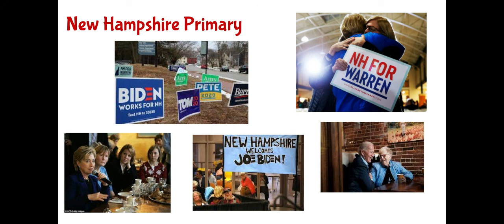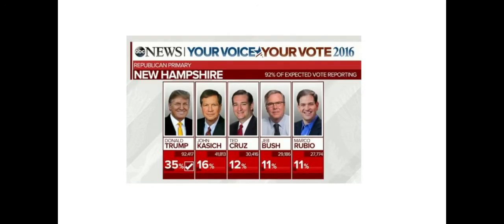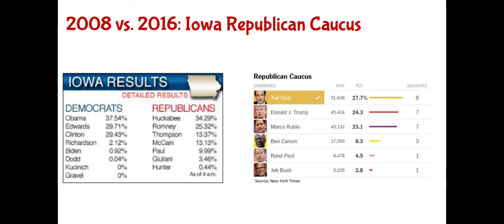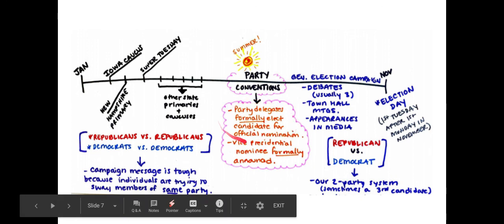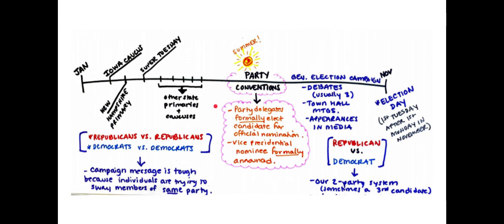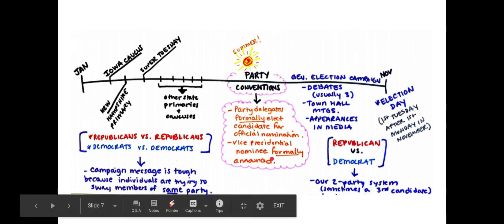In 2016, Donald Trump had a clear victory in the New Hampshire primary, whereas the caucus results had been much closer. Going back to the calendar — after you have two presumptive nominees, Democrat and Republican, the party conventions are where party delegates formally elect the candidate for the official nomination. We'll know Joe Biden is the candidate going into the Democratic convention, but it's formally done there. The vice presidential nominee will also be formally announced at the convention.